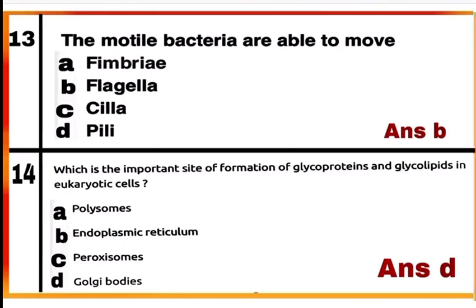Question 14: Which is the most important site of formation of glycoproteins and glycolipids in eukaryotic cells? Option D — Golgi bodies or Golgi apparatus — is the important site of formation of glycoproteins and glycolipids in eukaryotic cells.